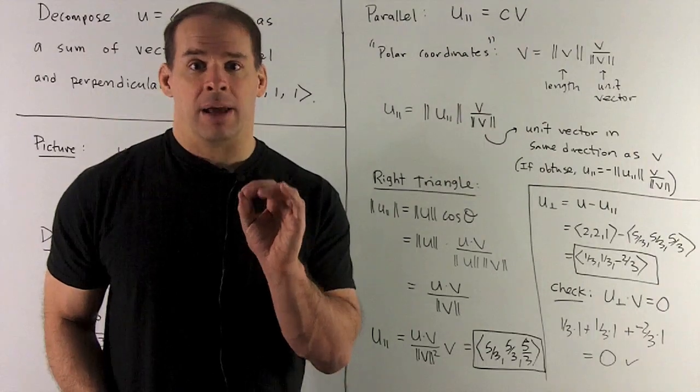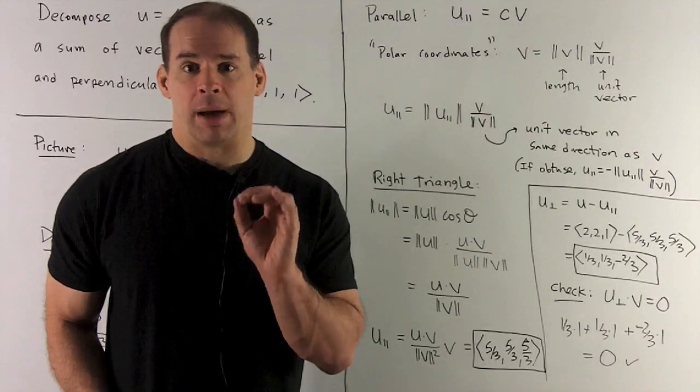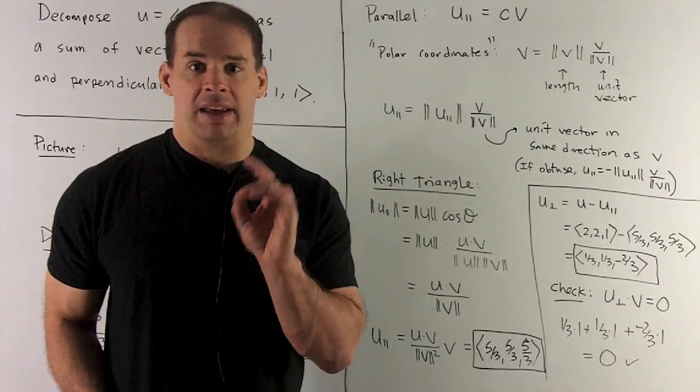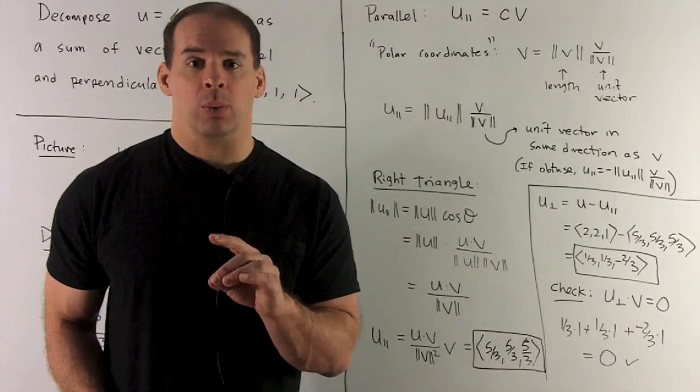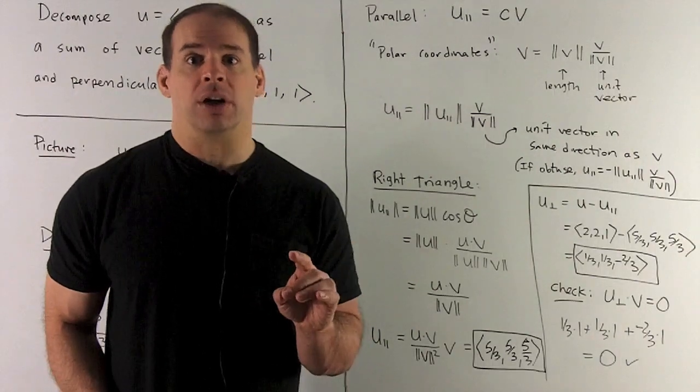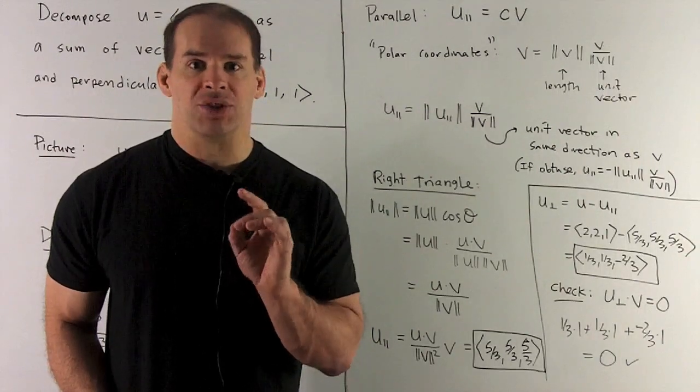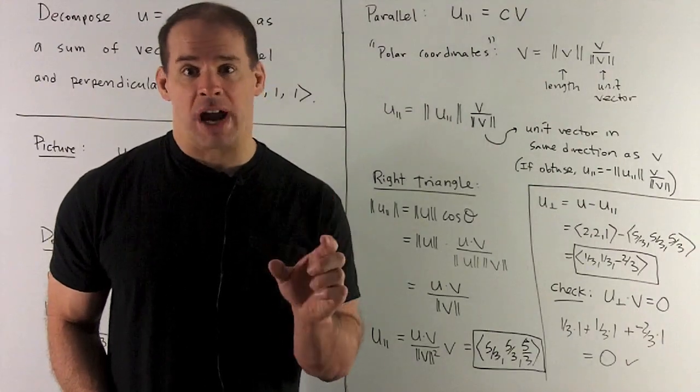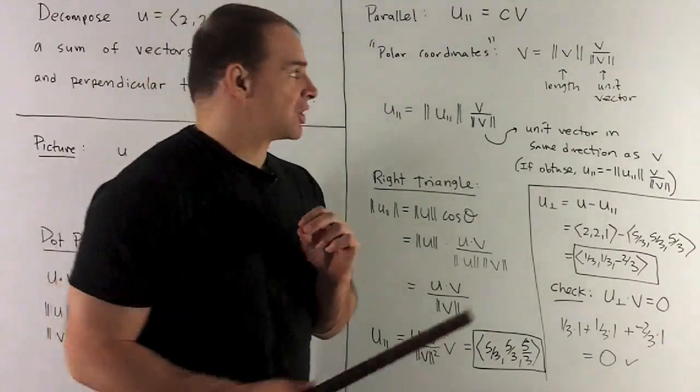We're going to take this idea and marry it to the polar decomposition of a vector. So what that says: take any vector non-zero, we can write it as a scalar times a unit vector. So you can think of that as just a length, which it will be the length, times a direction.